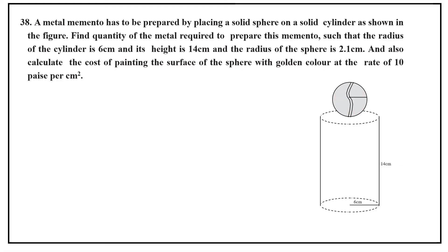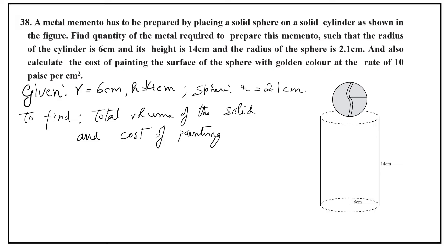Now let us take what has been given. Given: radius of the cylinder 6 cm, height of the cylinder 14 cm. For sphere, radius is 2.1 cm. To find out two things: total volume, and cost of painting the sphere.